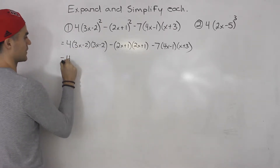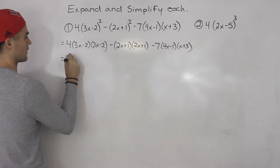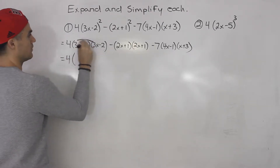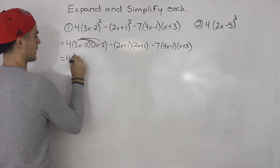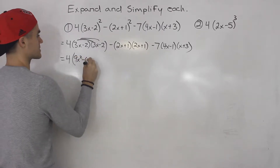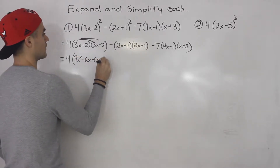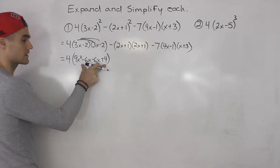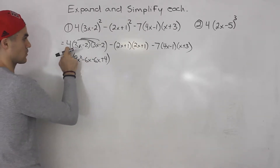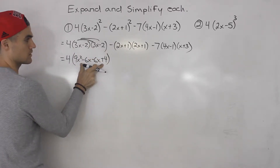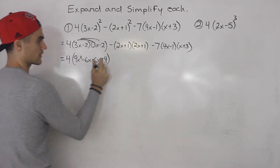For this first one we got the 4 in front, and when you FOIL it out you would end up with 9x squared minus 6x minus 6x plus 4. That stays in brackets because this 4 we're going to have to multiply by that whole expression in the brackets, so make sure you keep it in brackets.